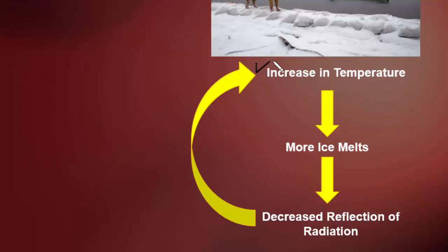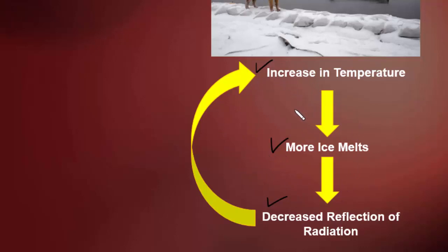If there is an increase in temperature, for whatever reason, this is going to cause more ice to melt. Imagine we're talking about the polar ice caps — temperature goes up, more ice melts. The less ice we have, the less reflection of radiation there's going to be. In other words, there is a decrease in the albedo effect. Less ice means less reflection, so radiation stays on the Earth and increases the temperature even more. That causes more ice to melt, which further decreases the reflection of radiation, and it keeps going around in a cycle. This is called a positive feedback loop — this increases this, which increases this, which increases this, et cetera.